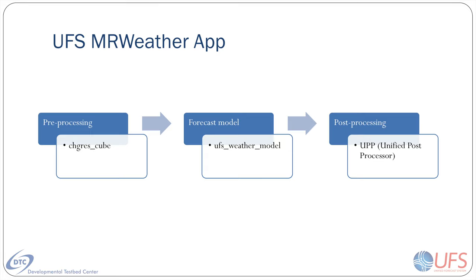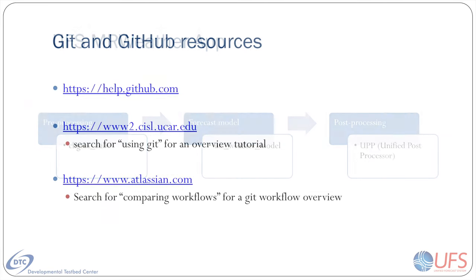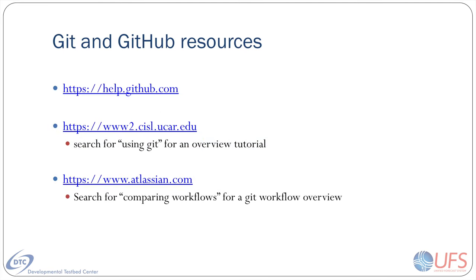The source code and scripts used to build and run the forecast workflow are organized in a hierarchical repository structure, starting with an umbrella repository for the app and for two sets of required libraries. The various code repositories are hosted at GitHub.com. If you are not familiar with Git version control or with GitHub.com, please start by reviewing some introductory material listed in the slide, then come back to this video.